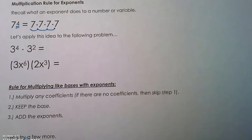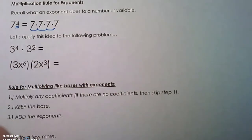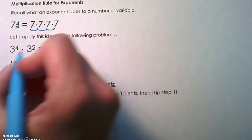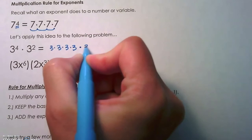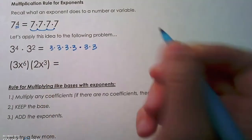We're going to apply that idea to these two multiplication problems, so you can see how the rule works. 3 to the 4th power is 3 multiplied by itself 4 times, times 3 squared, which is 3 multiplied by itself 2 times.